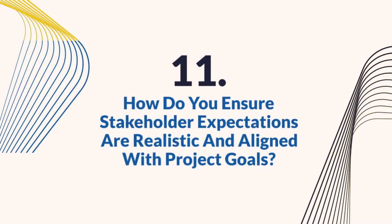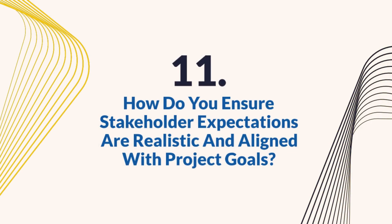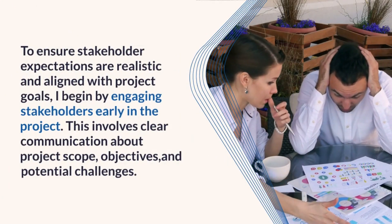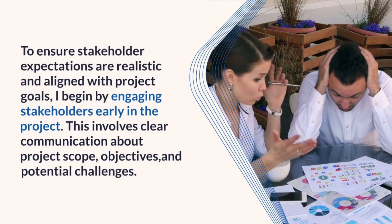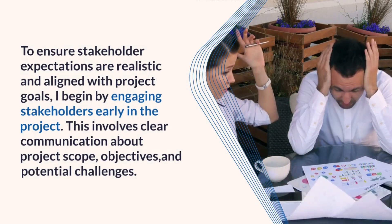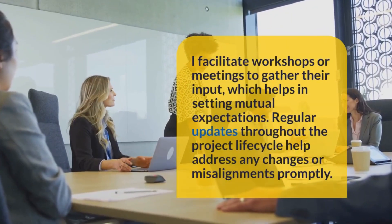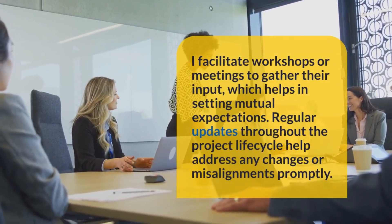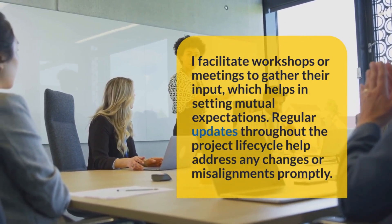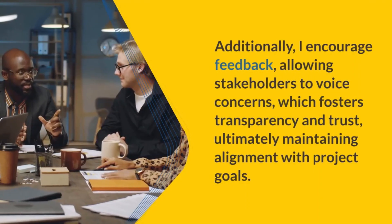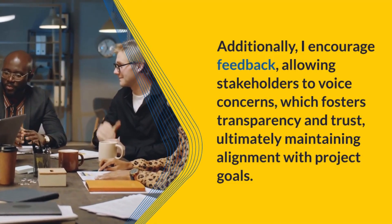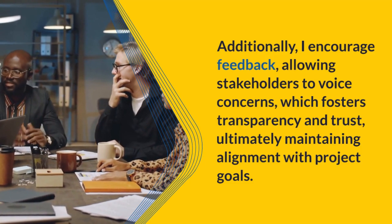Question 11: How do you ensure stakeholder expectations are realistic and aligned with project goals? To ensure stakeholder expectations are realistic and aligned with project goals, I begin by engaging stakeholders early in the project. This involves clear communication about project scope, objectives, and potential challenges. I facilitate workshops or meetings to gather their input, which helps in setting mutual expectations. Regular updates throughout the project lifecycle help address any changes or misalignments promptly. Additionally, I encourage feedback, allowing stakeholders to voice concerns, which fosters transparency and trust, ultimately maintaining alignment with project goals.